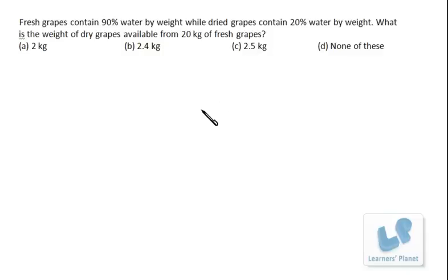Now there is no paperwork required at all. Since we are having 20 kg of fresh grapes, I'll just calculate the amount of pulp. In fresh grapes, 90% is water, that means 10% is pulp. So 10% pulp means 2 kg is pulp.